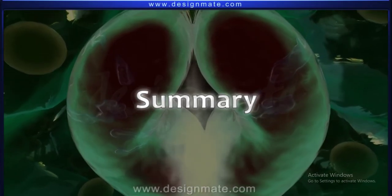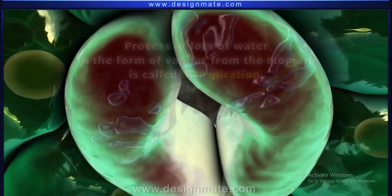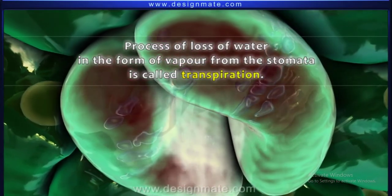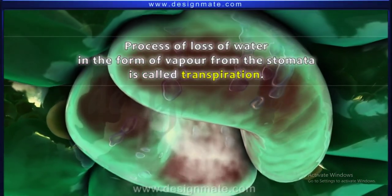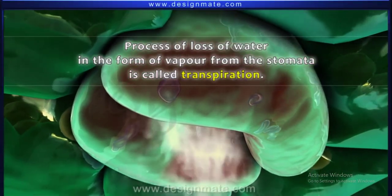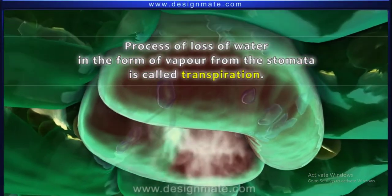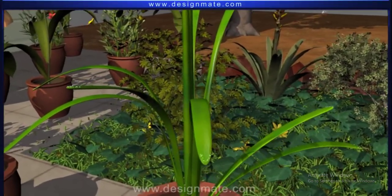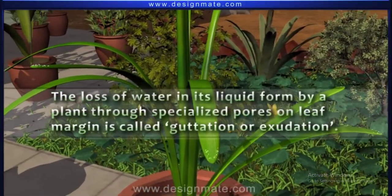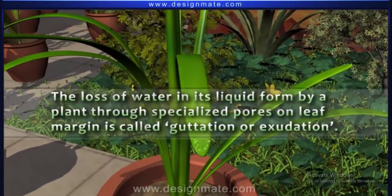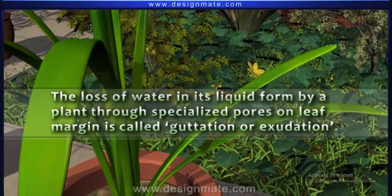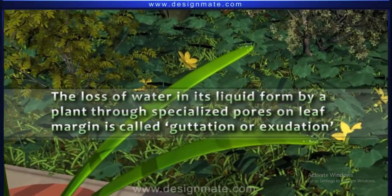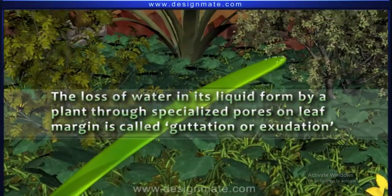Summary: The process of loss of water in the form of vapor from the stomata is called transpiration. The loss of water in its liquid form by a plant through specialized pores on the leaf margin is called guttation or exudation.